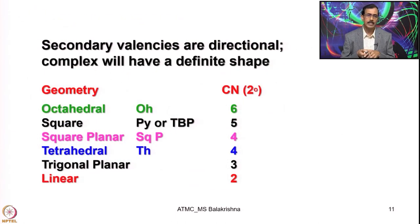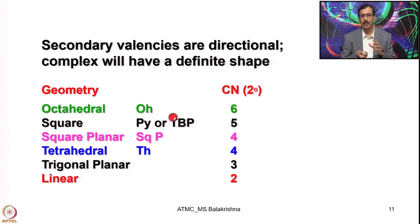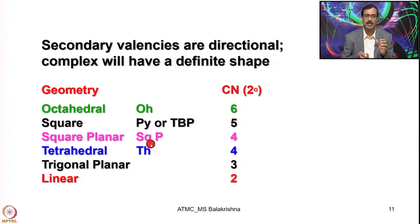When coordination number was 6, without any ambiguity he proposed octahedral geometry. When coordination number was 5, he proposed both square pyramidal geometry and trigonal bipyramidal geometry. For coordination number 4, he proposed both square planar geometry and tetrahedral geometry depending upon the metal ions and type of ligands involved. When coordination number was 3, he proposed trigonal planar, and for coordination number 2, he proposed linear geometry.